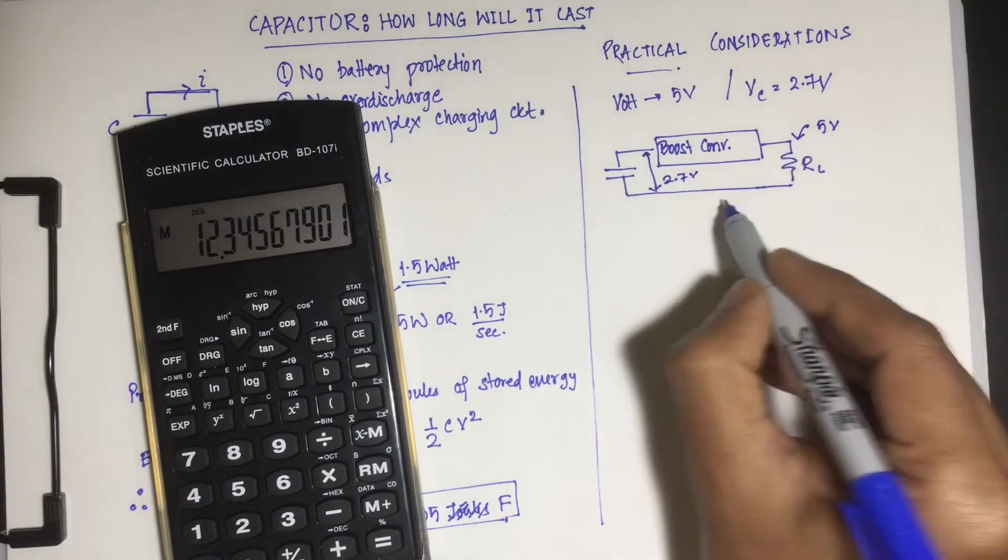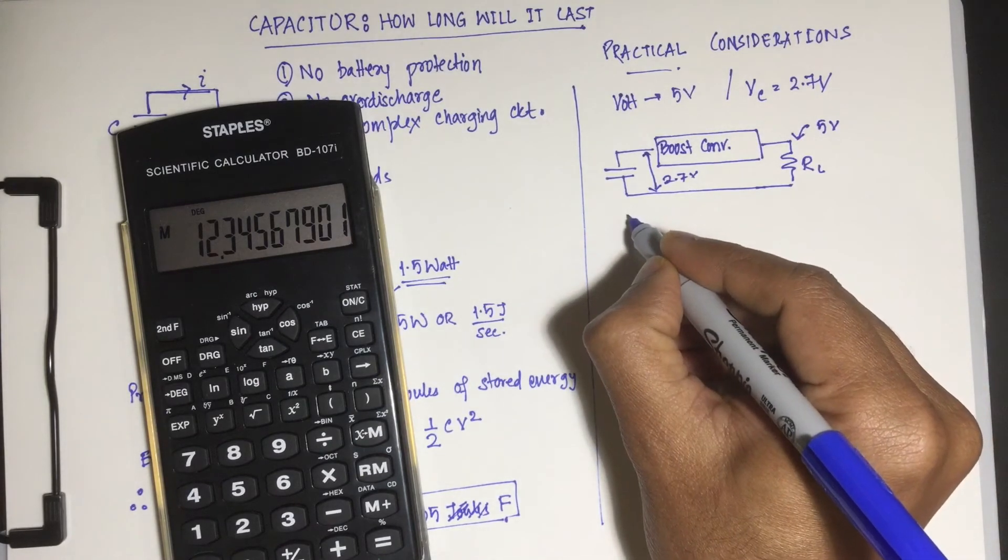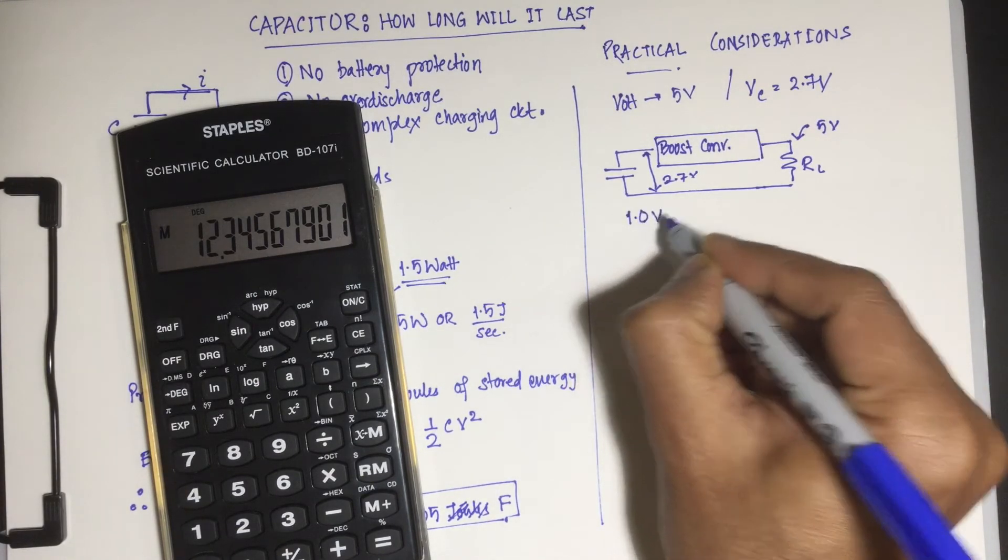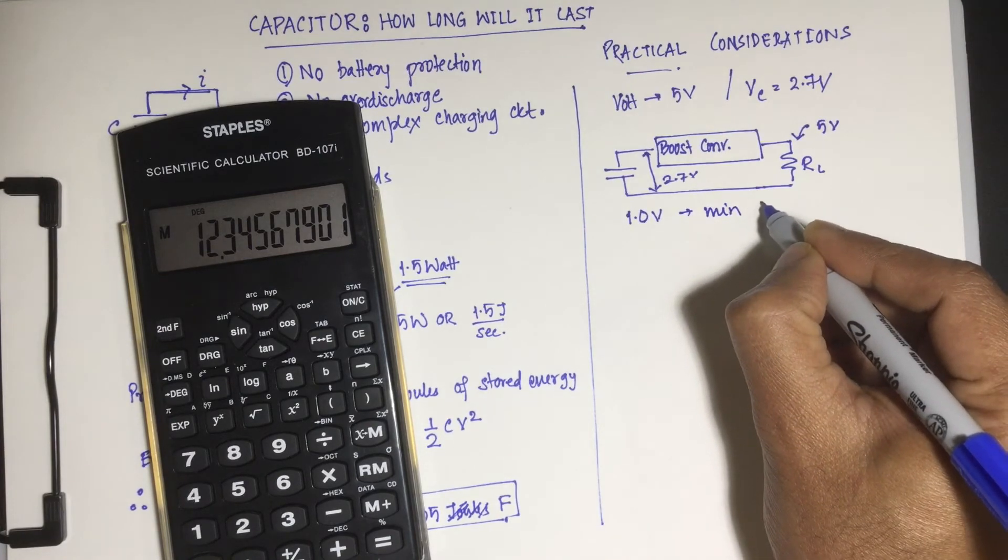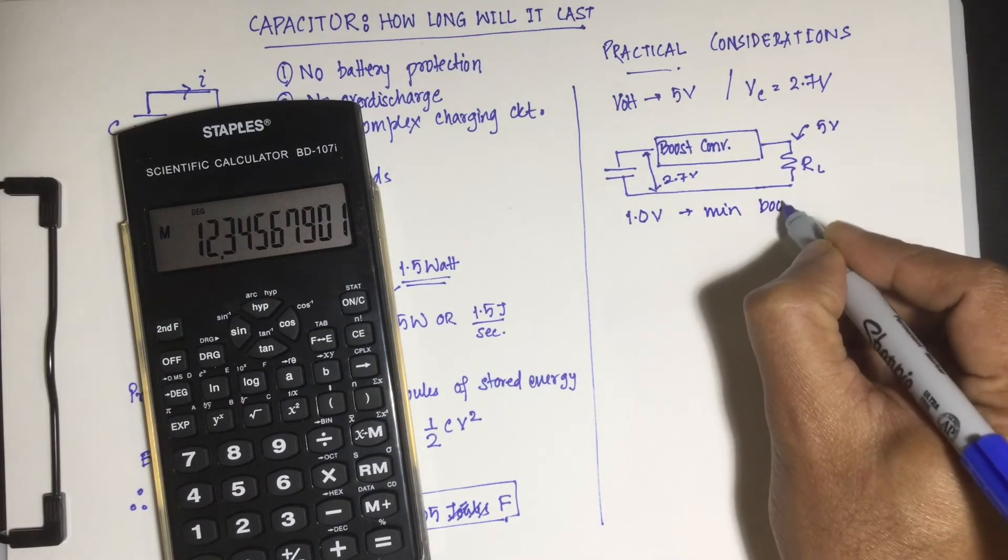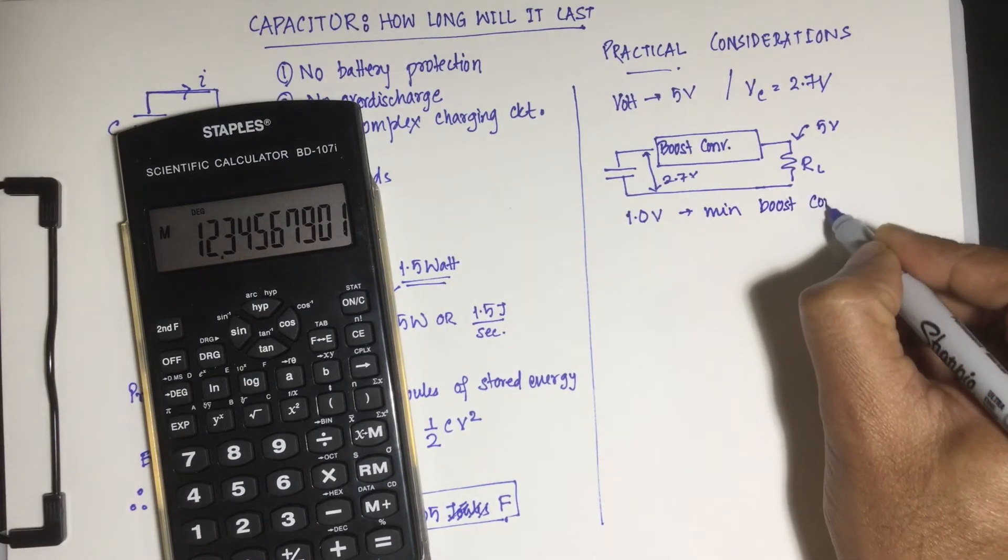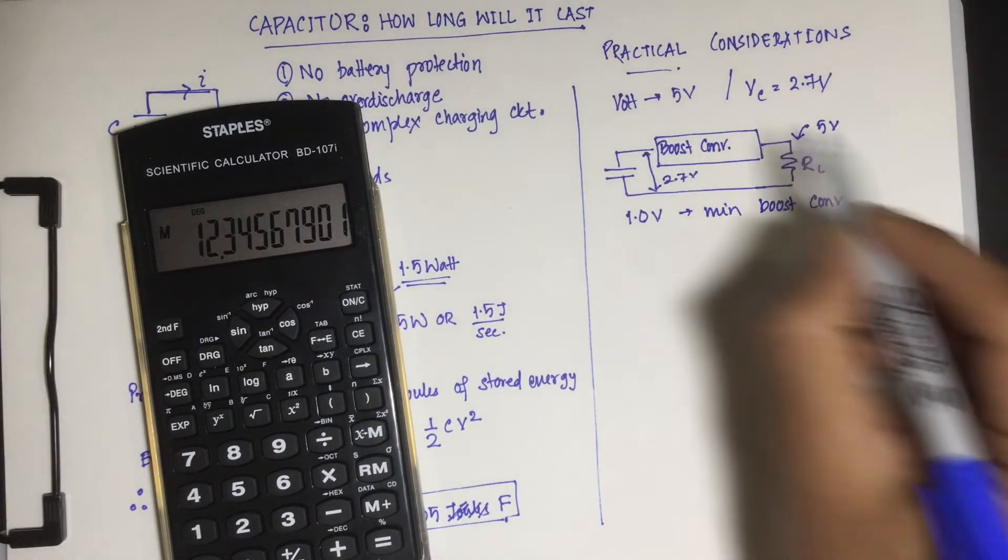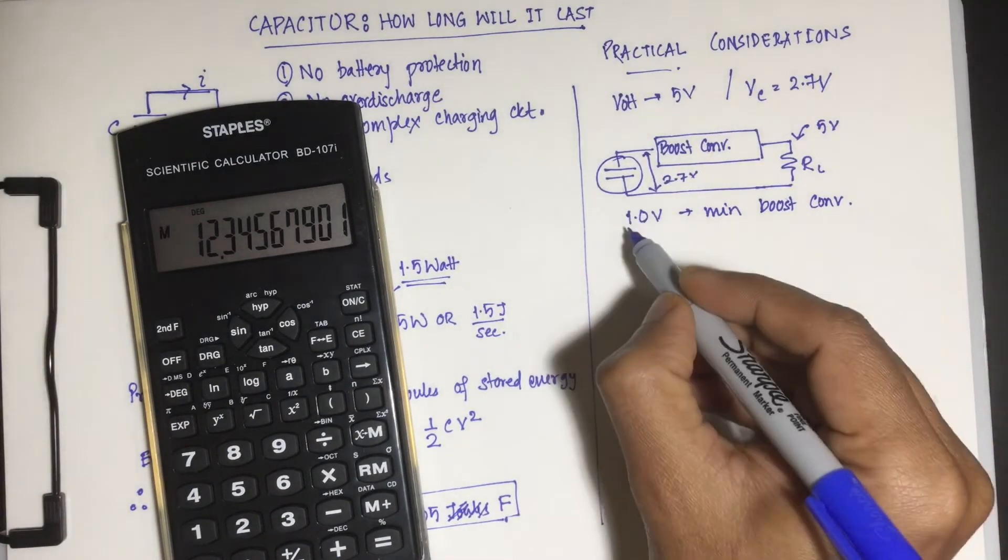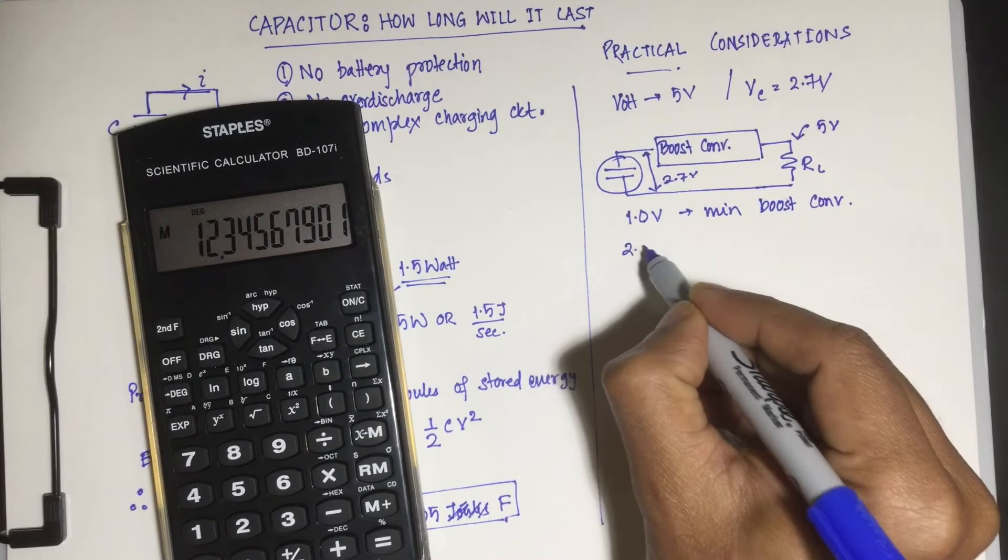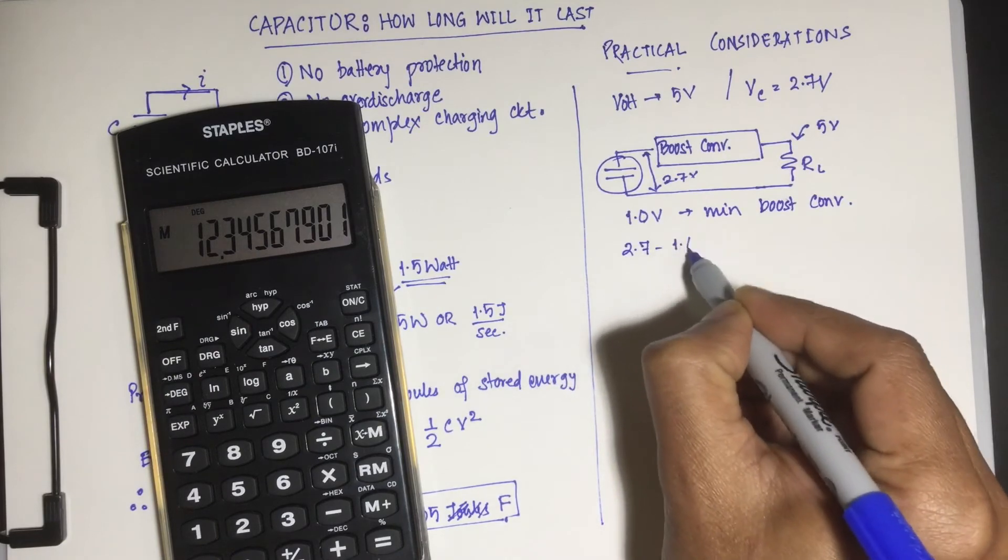But remember, boost converters don't work below a certain threshold. So let's say the threshold is 1 volt, so that's the minimum voltage for the boost converter above which it will work. So this capacitor which is charged to 2.7 volts is not going to work below 1.7 volts.